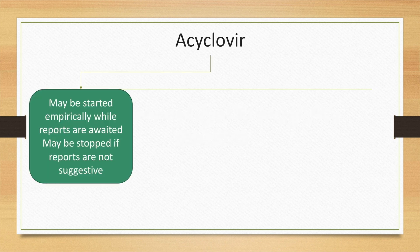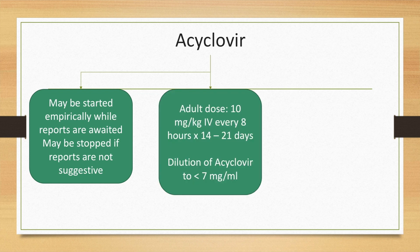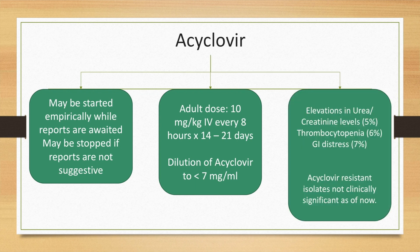Acyclovir may be empirically started when reports are awaited and may be stopped if the reports are not suggestive of viral meningitis. The adult dose is 10 mg per kg intravenous every 8 hours for 14 to 21 days, and the dilution of acyclovir must be made to less than 7 mg per milliliter. Elevations in urea and creatinine along with thrombocytopenia and GI distress are common, and acyclovir-resistant isolates are not clinically significant as of now.